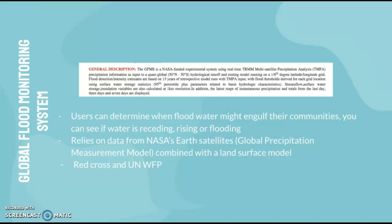With this system, users can determine when floodwater might engulf their communities — whether water is receding, rising, or flooding. It relies on data from NASA's Earth satellites combined with a land surface model, using a combination of tools for prediction. There are also partnerships with the Red Cross and the UN World Food Programme to coordinate flood response.